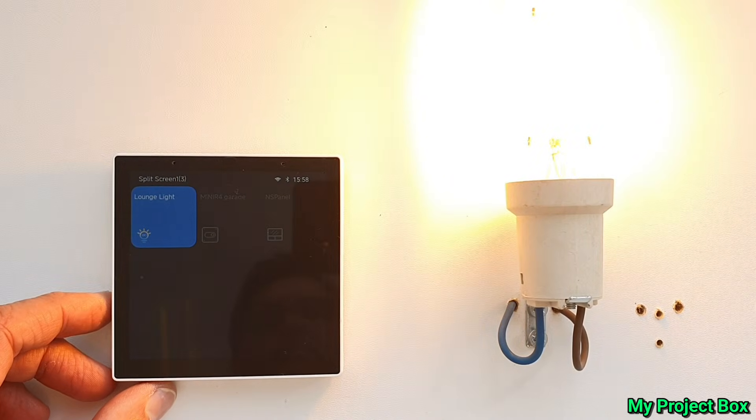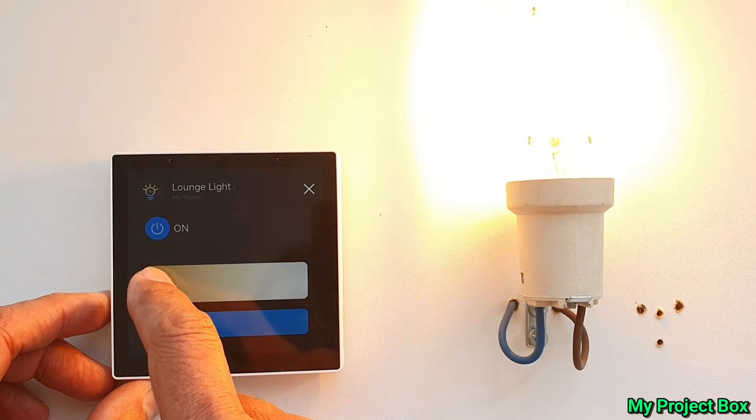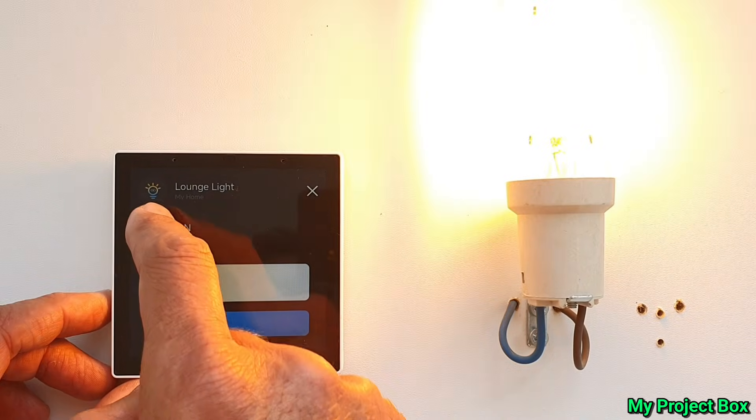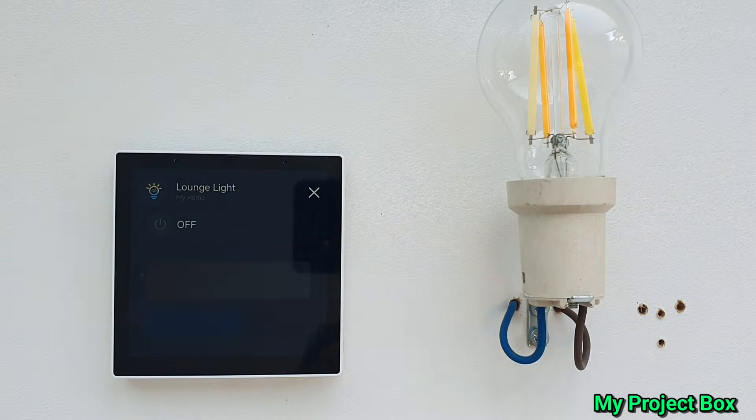Just like that the NS Panel can replace a light switch and turn it on and off just like a normal light switch can. Hooray! It works! We can even change the color tone of the bulb and we can adjust the brightness and turn it on and off. Excellent!